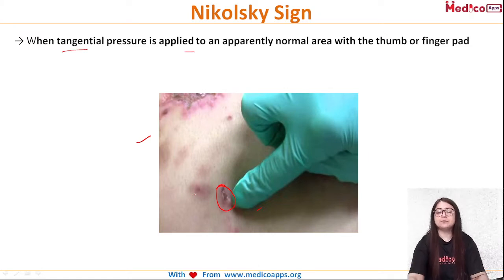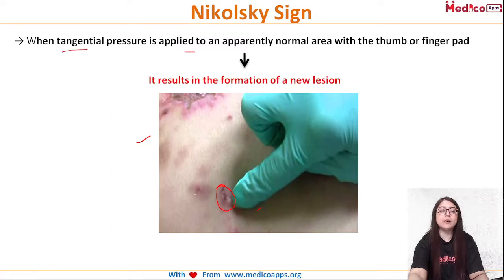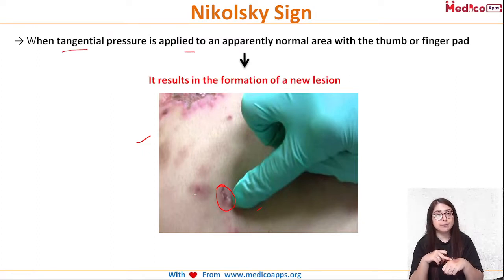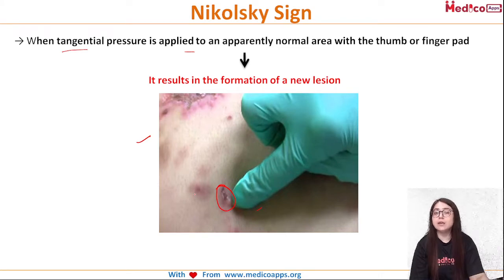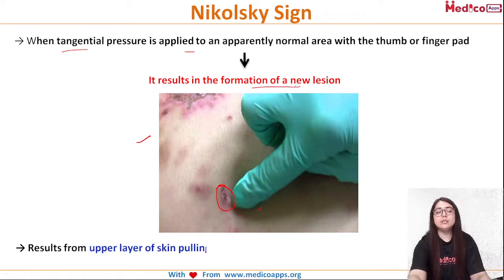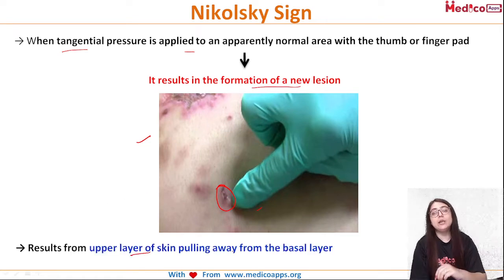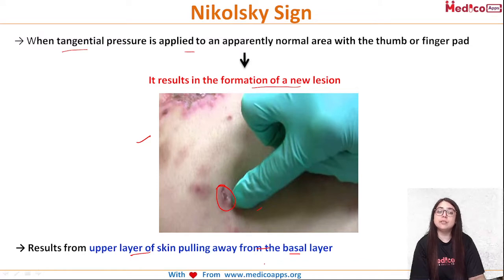To repeat: whenever you apply tangential pressure on the normal apparent area around the lesion, the skin tends to slip off from the base, and you can see the eruption of a new lesion. This results from the upper layer of the skin pulling away from the basal layer, which is responsible for new lesion formation.